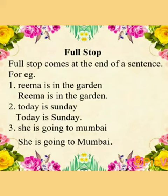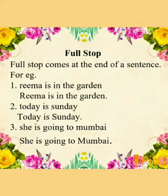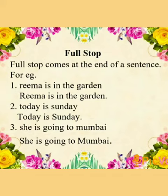For example: 'Rima is in the garden.' Here, 'Rima' starts with a capital letter because it starts the sentence, and also because Rima is a special name — it's a name of a person. At the end of the sentence, we have a full stop.